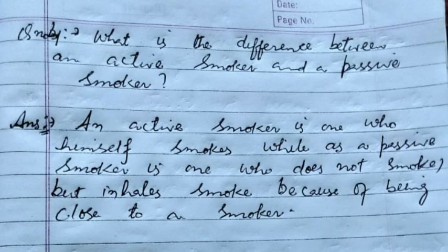Question number four: What is the difference between an active smoker and a passive smoker? Answer: An active smoker is one who himself smokes, while a passive smoker is one who does not smoke but inhales smoke because of being close to a smoker. This is all about today. Thank you, have a nice day ahead. Assalamu alaikum warahmatullahi wabarakatuh.